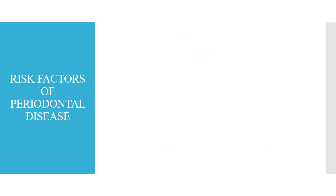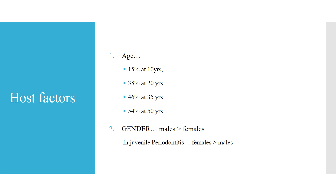Coming to risk factors of periodontal disease — age: 15% at 10 years, 38% at 20 years, 46% at 35 years, 54% at 50 years. So people who are aged will definitely have more periodontitis, and in the meantime they may be having other oral diseases as well.